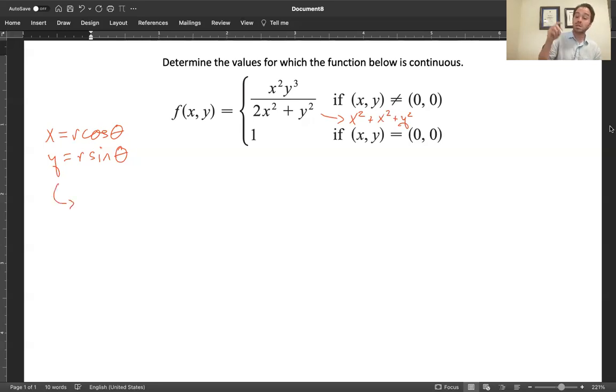Then with these substitutions, this function becomes r squared cosine squared theta, that's x squared. And then y cubed is going to be r cubed sine cubed theta. And on the bottom, x squared is r squared cosine squared theta. And then the rest of it is going to be plus r squared. That's this part.